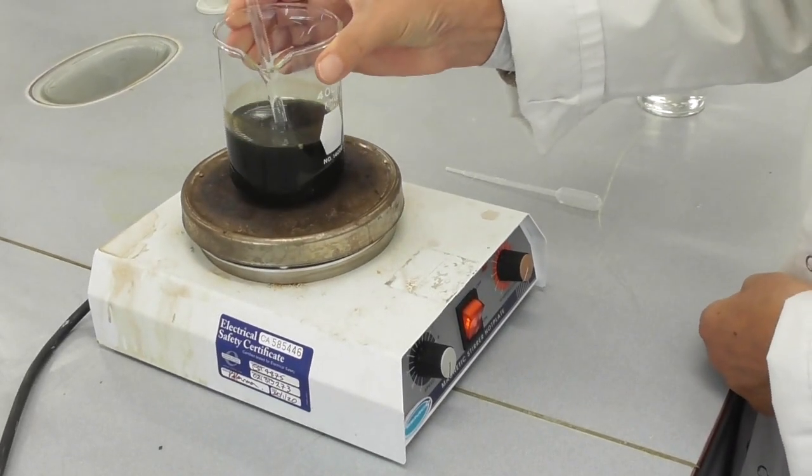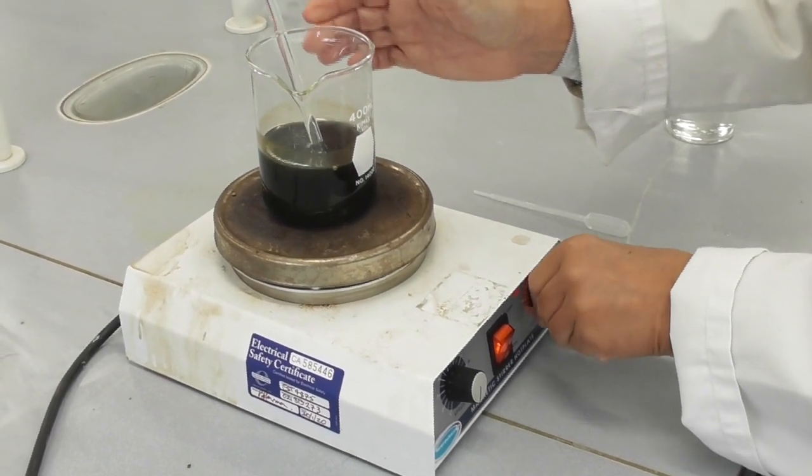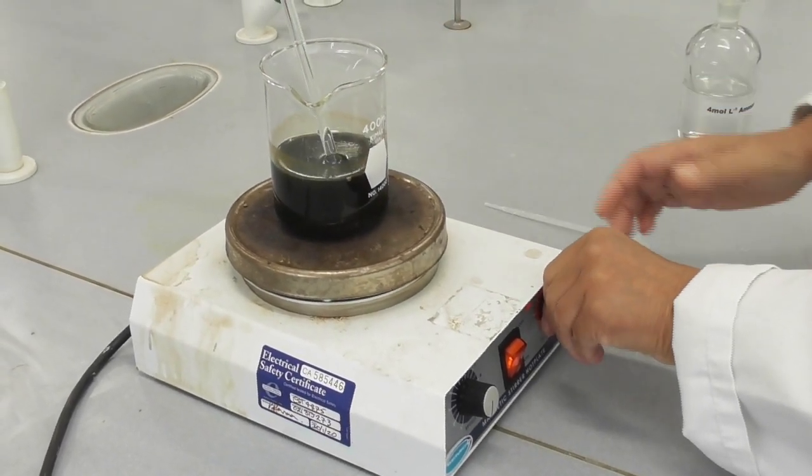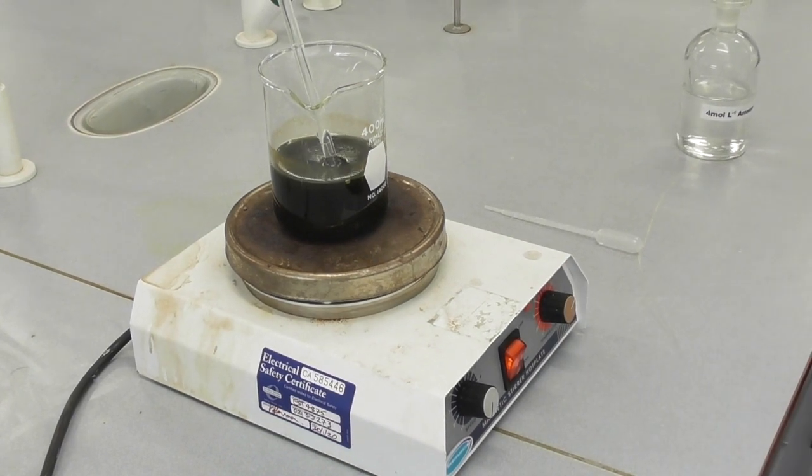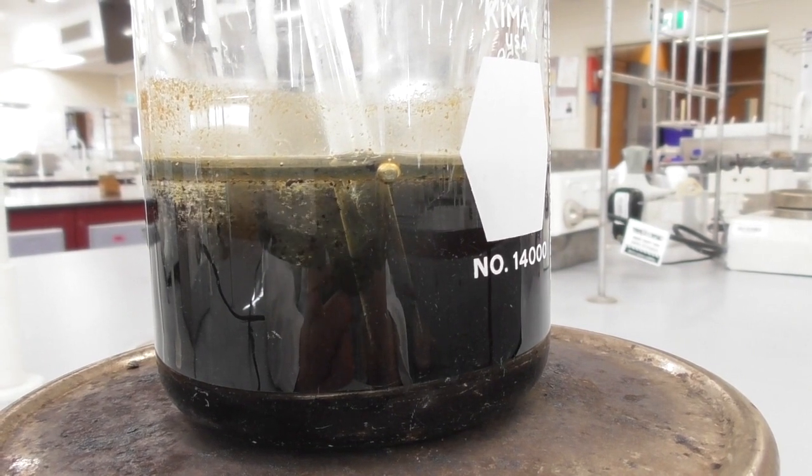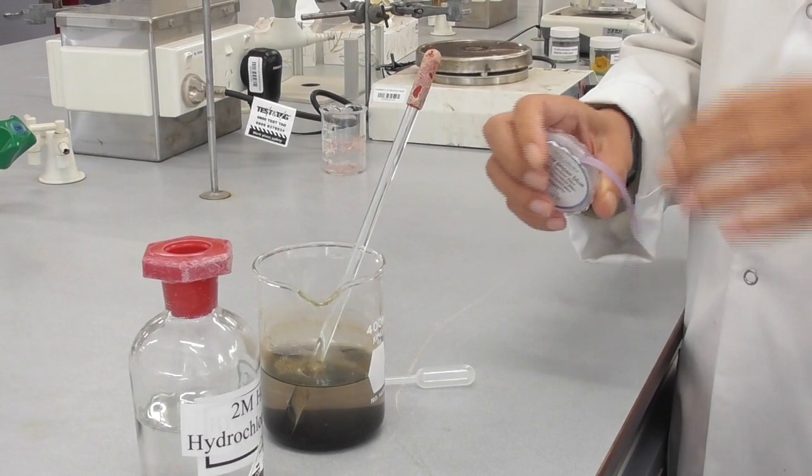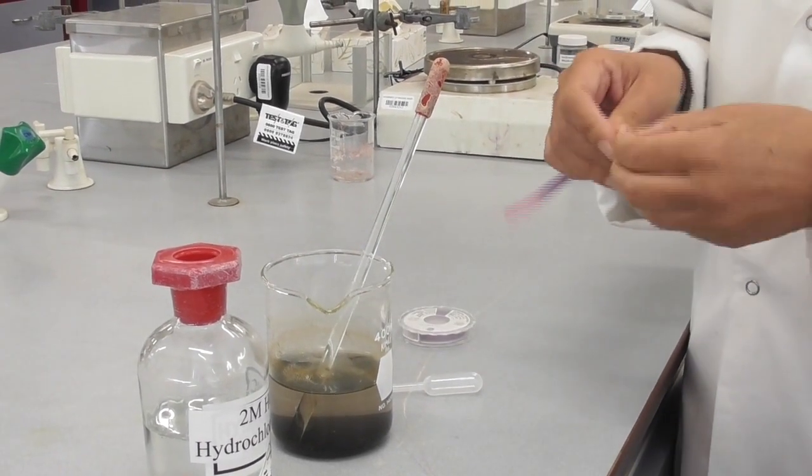To help the magnetite coagulate I put the beaker onto a hot plate and heat the solution to just under boiling temperature. Here we can see the magnetite coagulating and settling at the bottom of the beaker.